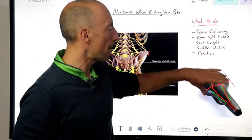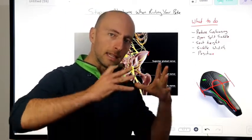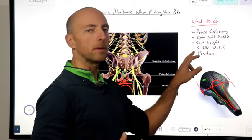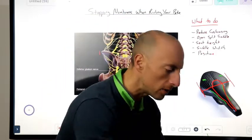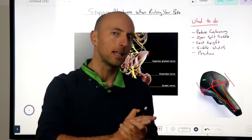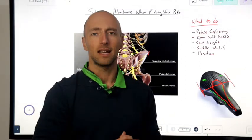Your saddle width, remember men need a male saddle, women need a female saddle. It's very different. And also check your position. If we're too far forward and we're reaching too far down, we're gonna start getting a lot of pressure on that front party perineum and you're gonna start going numb again as well.